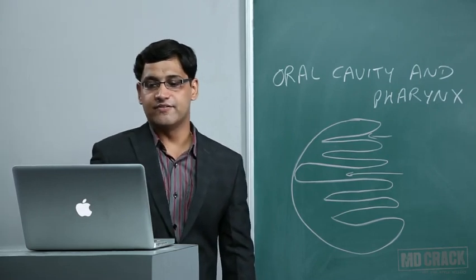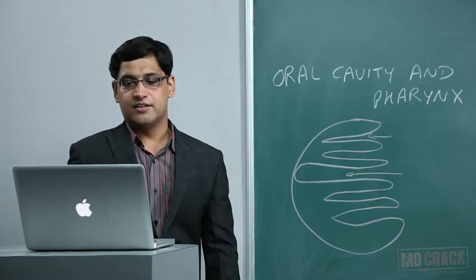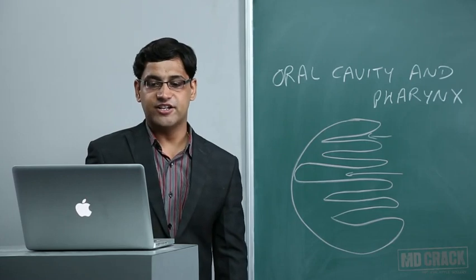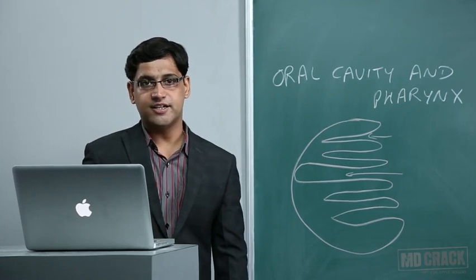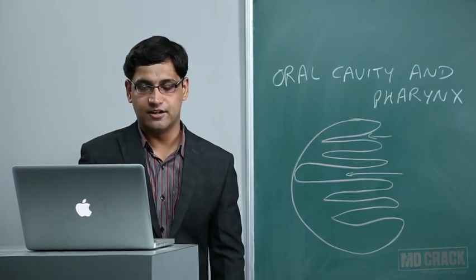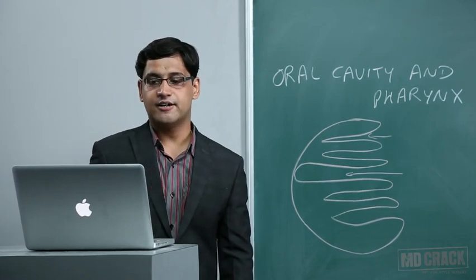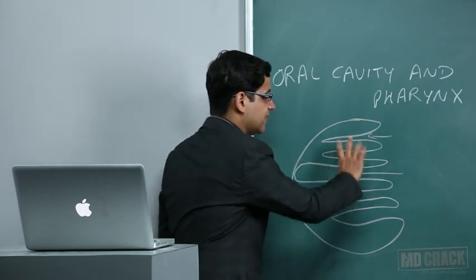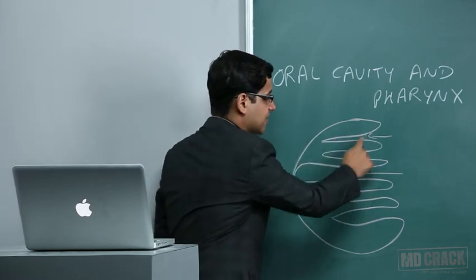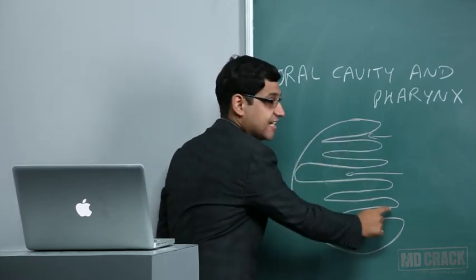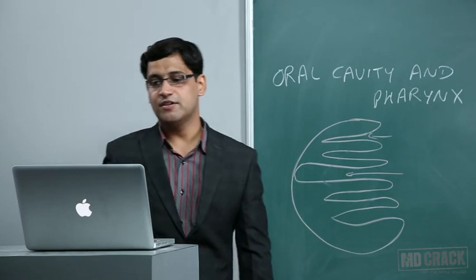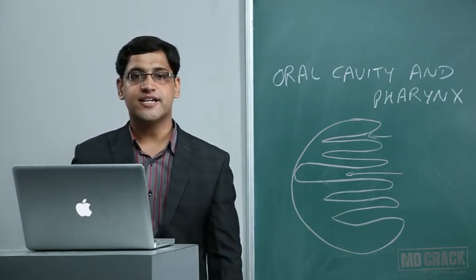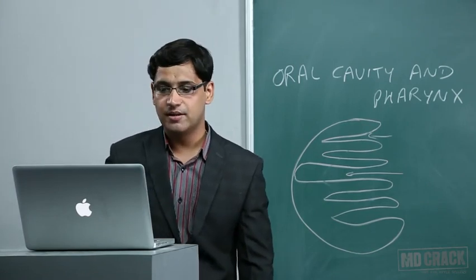Out of the 15 to 20 crypts, one large crypt is known as crypta magna. The intratonsillar cleft represents persistence of the ventral portion of the second pharyngeal pouch — a developmental anomaly that divides the tonsil into two parts.